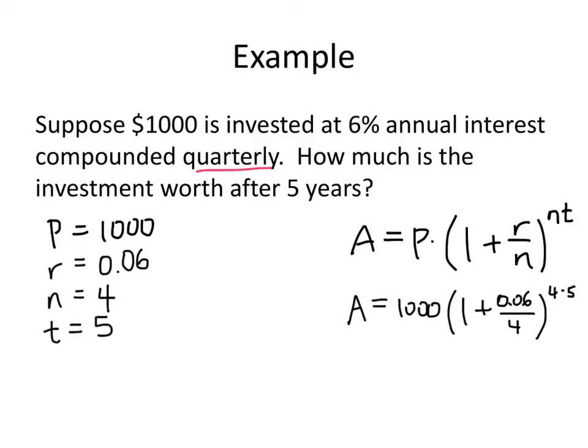And when we put that in our calculator, that all works out to be 1,346.855, or in other words, $1,346.86. Since we're talking about dollars and cents, we always want to round to two decimal places.